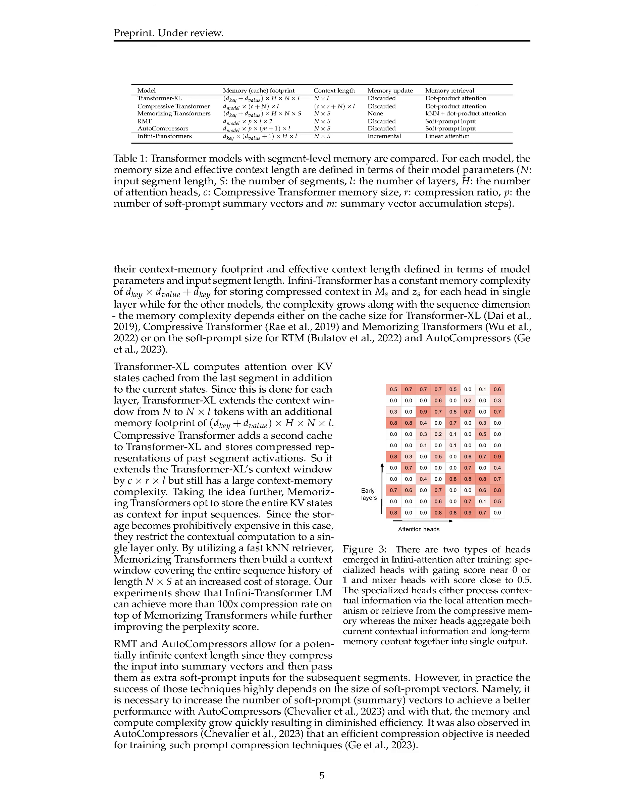In this section, we introduced compressive memory in InfiniAttention, where we reuse query, key, and value states from dot-product attention to enable efficient long-context adaptation and accelerate training and inference. By parameterizing the memory with an associative matrix, we simplify the memory update and retrieval process, incorporating a delta rule for improved memory updates. Our InfiniTransformer offers an unbounded context window with constant memory complexity, outperforming previous memory models like Transformer XL, Compressive Transformer, Memorizing Transformers, RMT, and AutoCompressors in terms of compression rate and perplexity score.